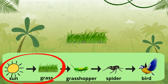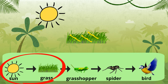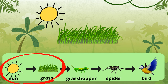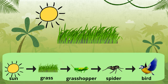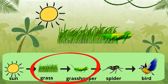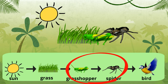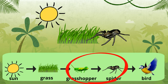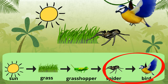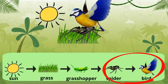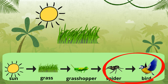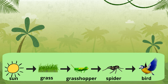The grass absorbs the energy from the sun, allowing it to grow. The grasshopper eats the grass, taking its energy. The energy of the grasshopper is then passed on when it's eaten by the spider. The energy is passed on once again when the spider is eaten by a bird. This food chain shows one example of how energy moves between living things.